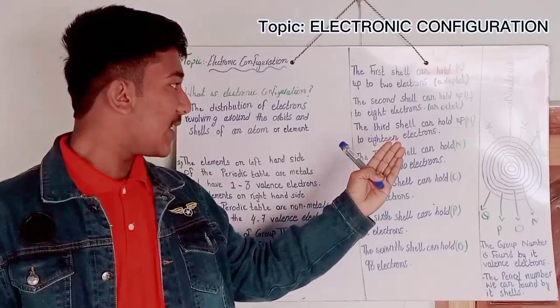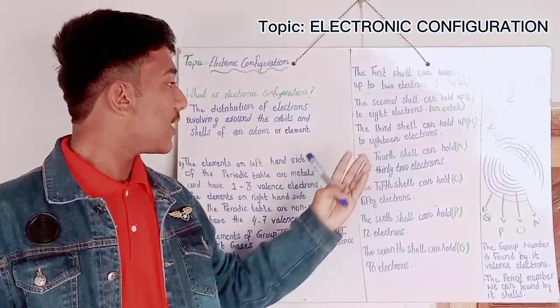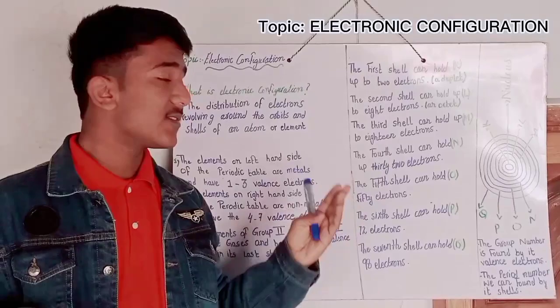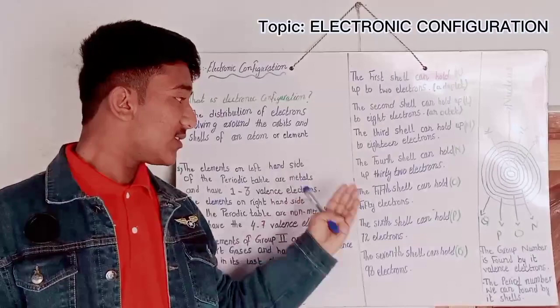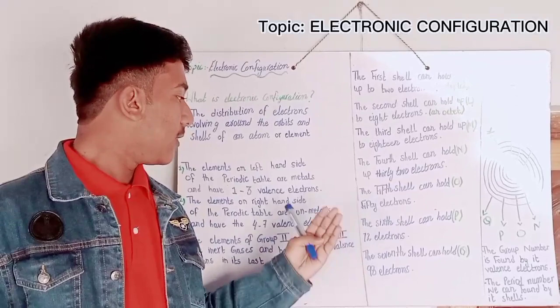The third shell is called M shell and it can hold up to 18 electrons. The fourth shell is called N shell and can carry 32 electrons. The fifth shell is called O shell and have 50 electrons.